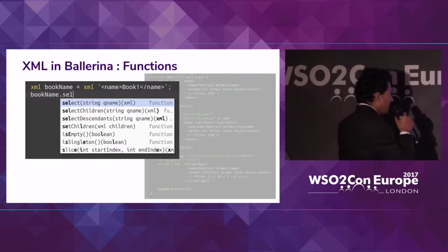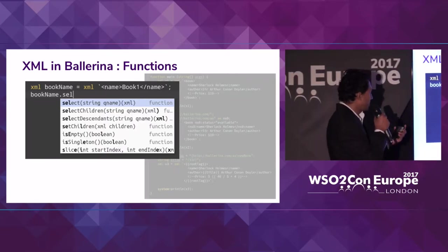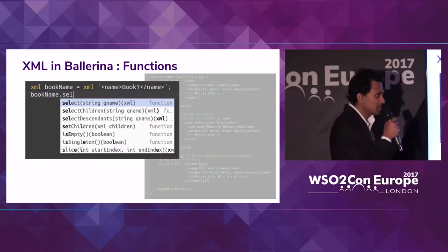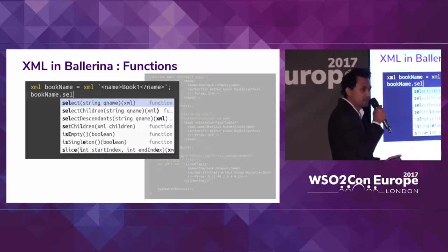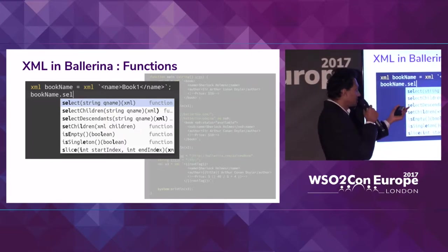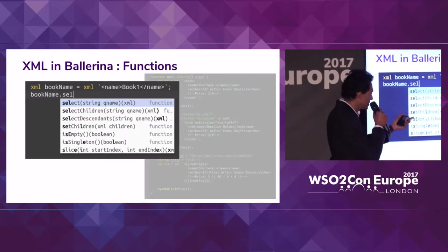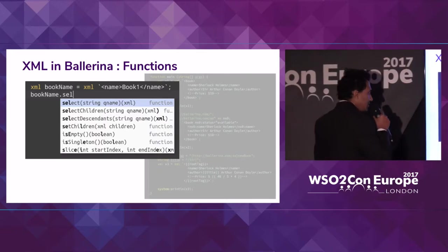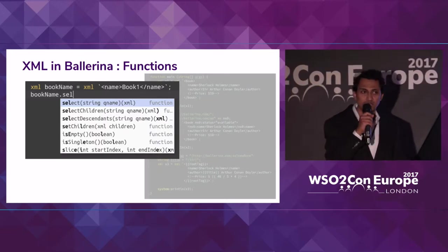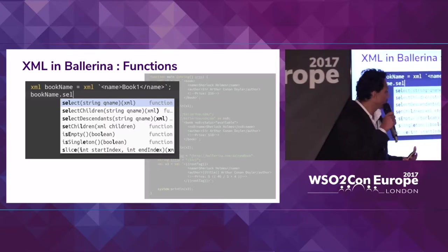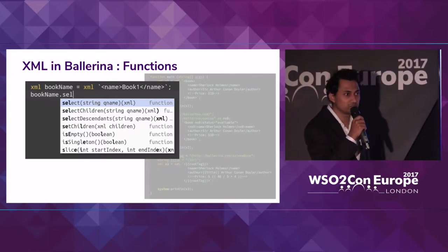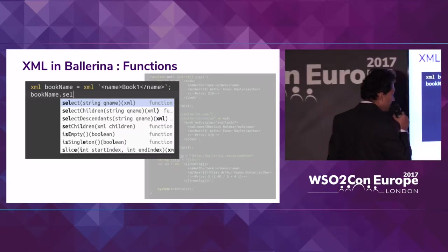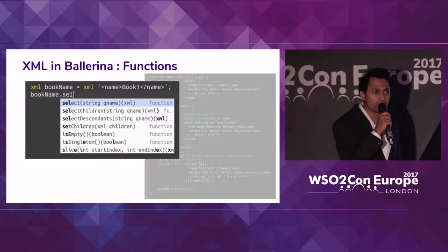Lastly, I'd like to talk about some of the functions supported by Ballerina for the XML data type. There are quite a few functions — you can select elements, select children, select descendants, set children, and check if it is empty. With all these functionalities, we actually eliminate the need for XPath. You know that usually when you work with XML you have to use XPath to navigate through the XML payload. With Ballerina, you don't really have to do that because Ballerina itself is sufficient to transform a given XML payload.